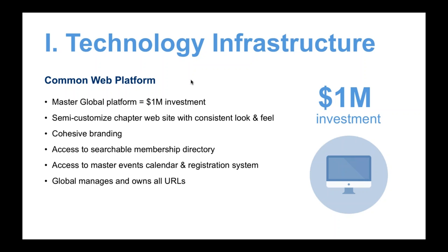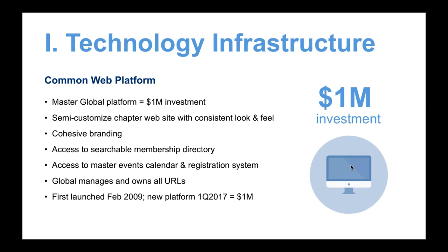A lot of the idea behind this was cohesive branding, look and feel for the organization, showing that it is a united organization, and serving members with a way to find each other and connect. At the heart of ACG's value proposition is the ability to connect and do business with each other. 75% of our members say that's what they do — they do business with other members, buy and sell companies. They're investment bankers, private equity, and strategic buyers of middle market companies. So connecting and networking is the central value proposition, and a common web platform was critical to meeting that need.